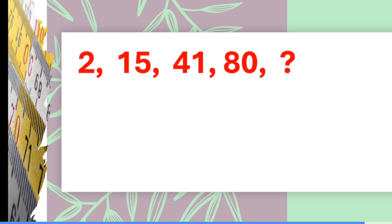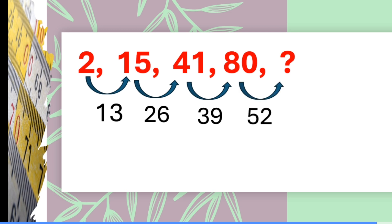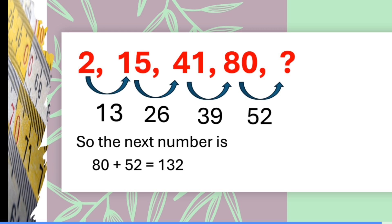Here: 2, 15, 41, 80. What should be the next number? Let's find the difference. The differences are 13, 26, and 39 — which are multiples of 13. So the next difference must be 52, and the next term is 80 plus 52, which equals 132.